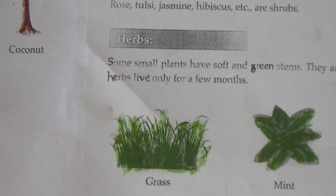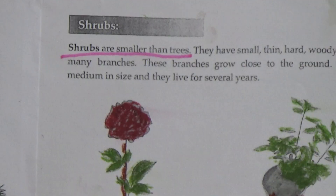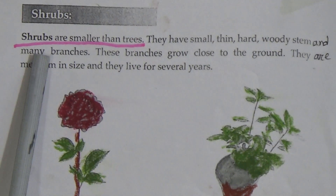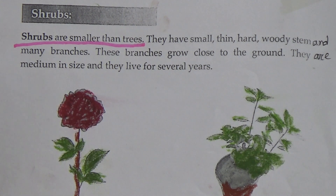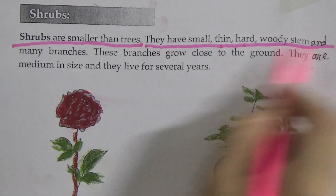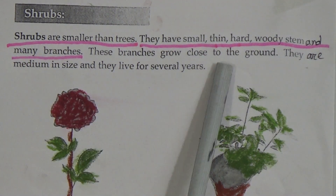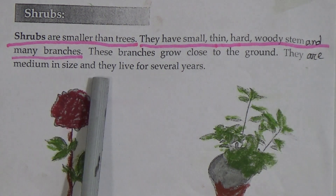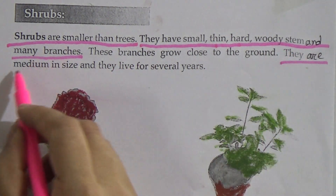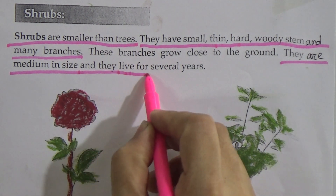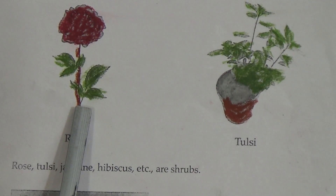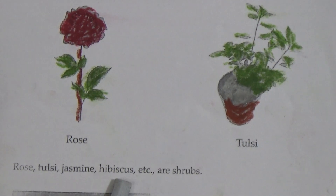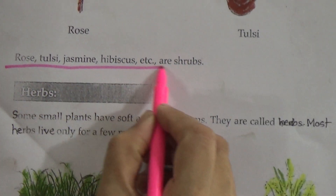Go to the next page, page number 22. Shrubs — shrubs are smaller than trees. Underline this line and memorize it. Shrubs have small, thin, hard, woody stems and many branches. These branches grow close to the ground. They are medium in size and they live for several years. See this figure — this is a rose plant and this is tulsi. Rose, tulsi, jasmine, hibiscus, etc. are shrubs.